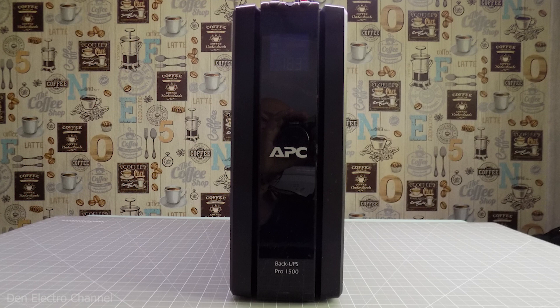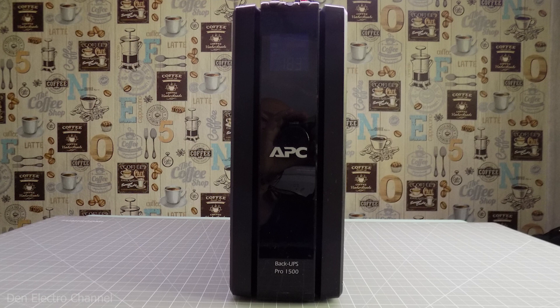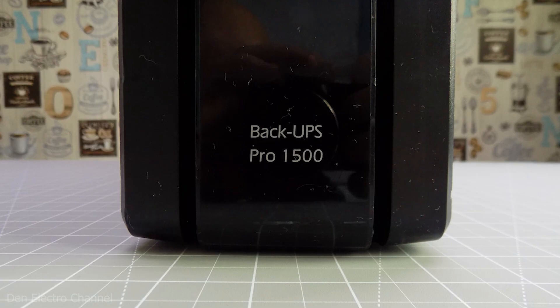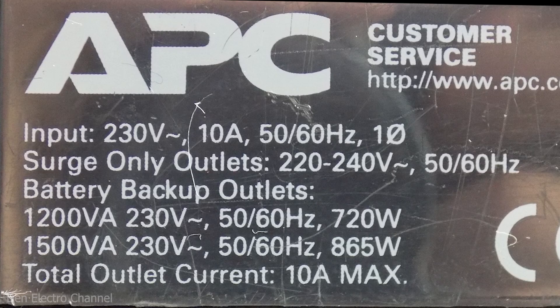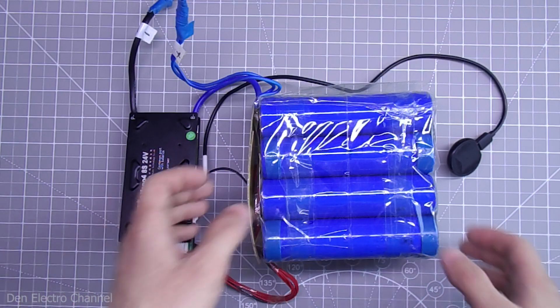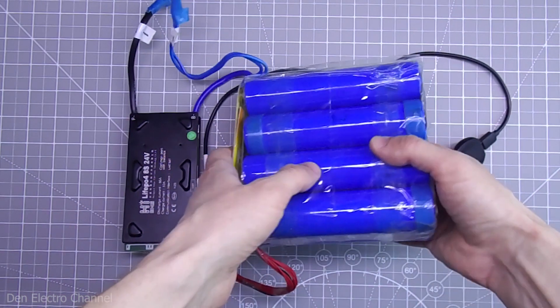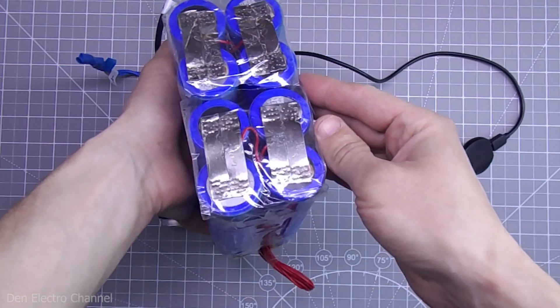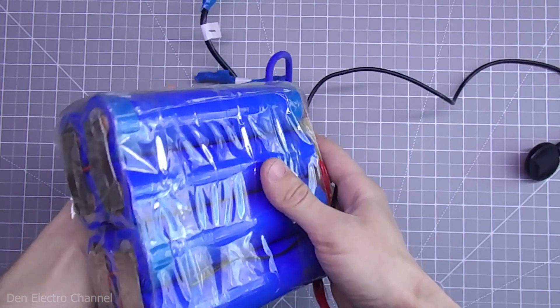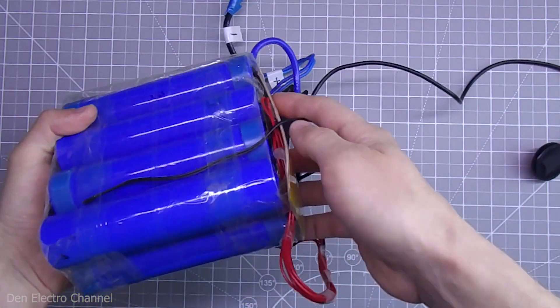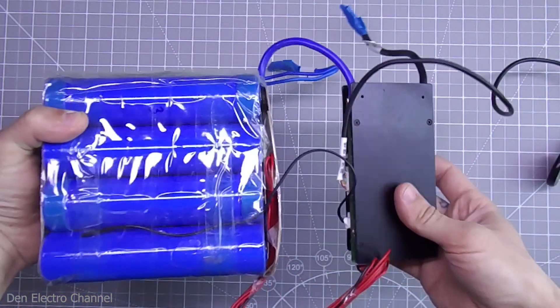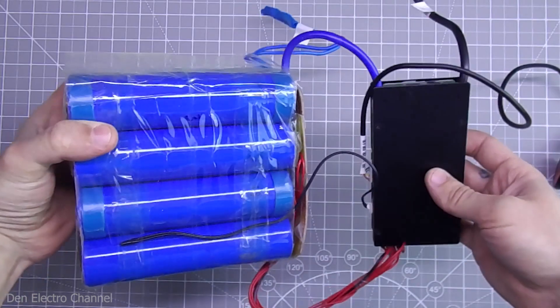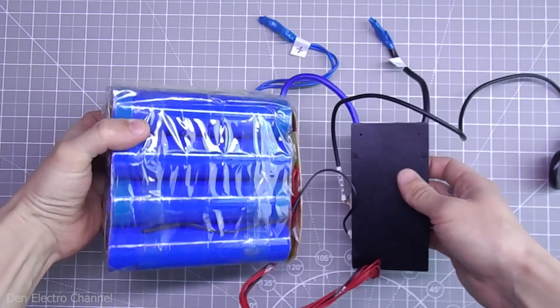The UPS that I will be making changes to is manufactured by APC, model Back UPS Pro 1500. Maximum output power 865 watts. Instead of standard lead acid batteries, this circuit will be used. This is a battery of 8 lithium iron phosphate batteries controlled by a smart BMS. At first everything looks complicated and confusing, but in reality, it is not so.